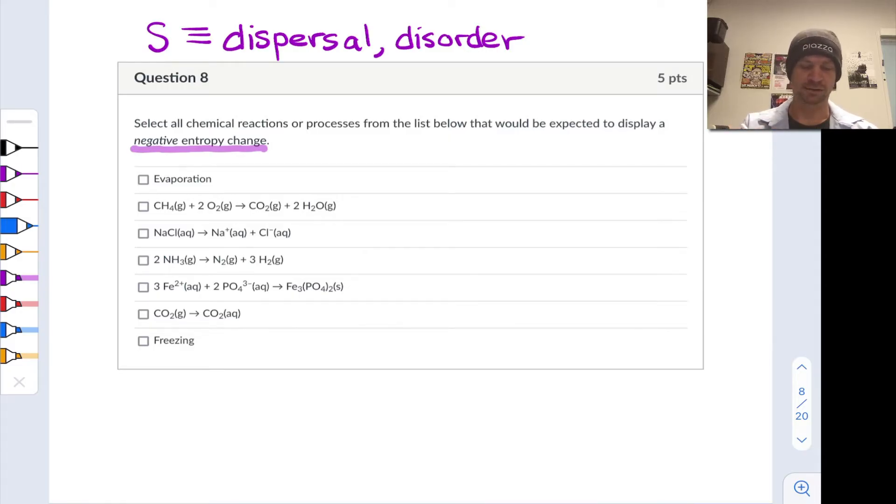So first we have evaporation. Now evaporation corresponds to the conversion of a liquid where the molecules are relatively close together, moving relatively slowly into a gas where the particles are much farther apart, generally taking up a much larger volume and generally moving much more quickly. This corresponds to an increase in energy dispersal, matter dispersal, and so this is definitely a positive delta S in the first case. We can go ahead and cross through it.